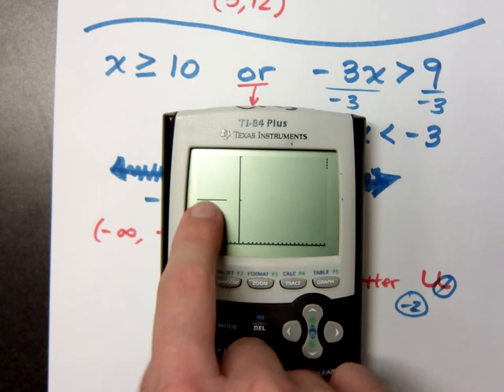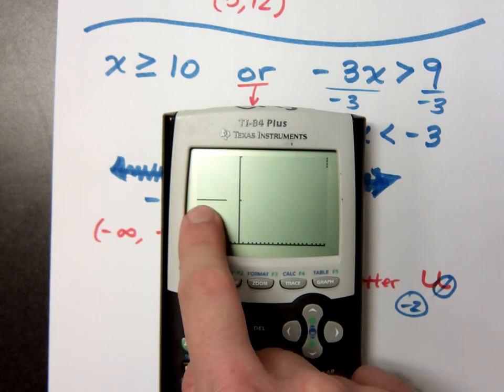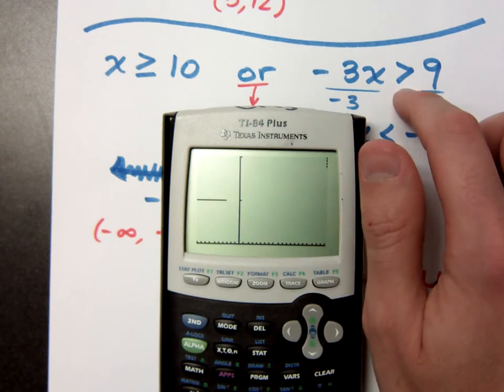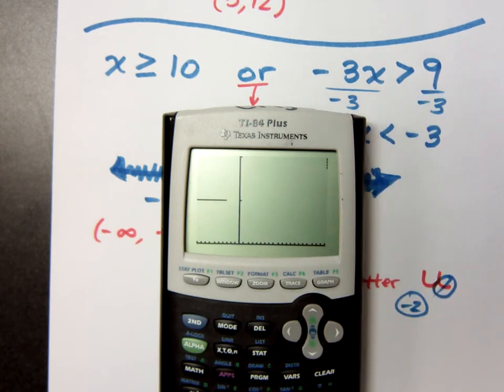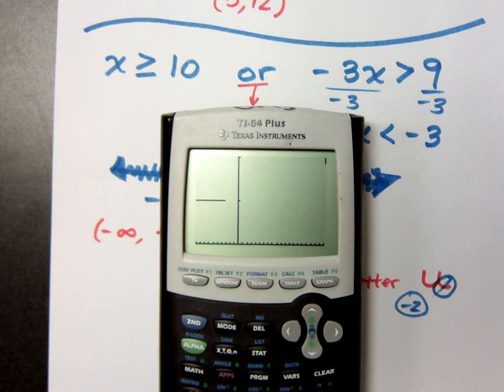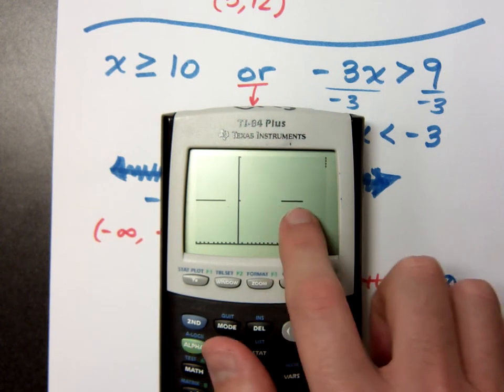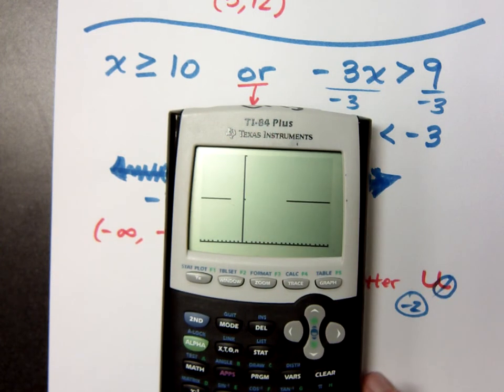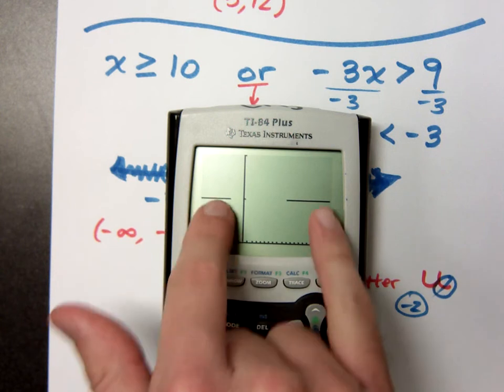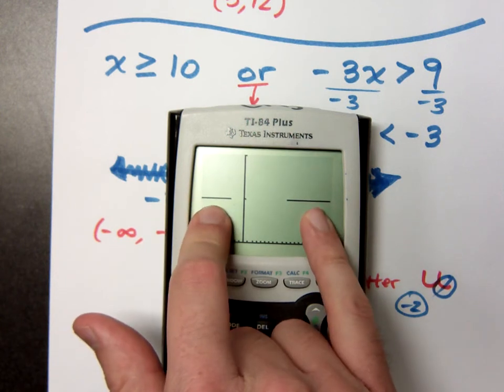So, you see here, this is where x is less than negative 3. That's what happened from this first inequality right here. And as it keeps graphing, see, it's starting to graph that x is greater than or equal to 10. So, you have two different pieces right here.